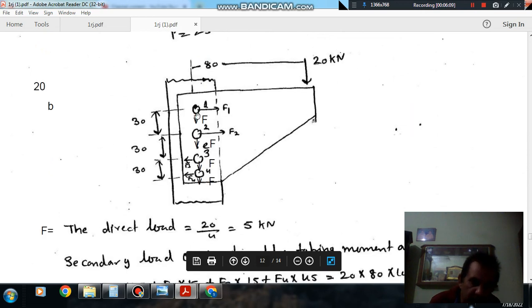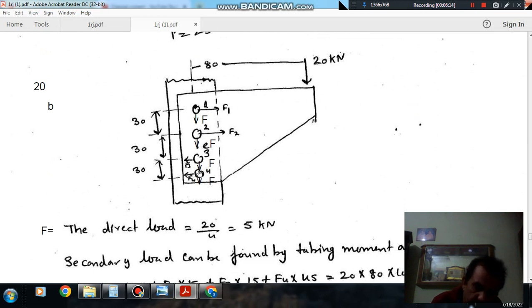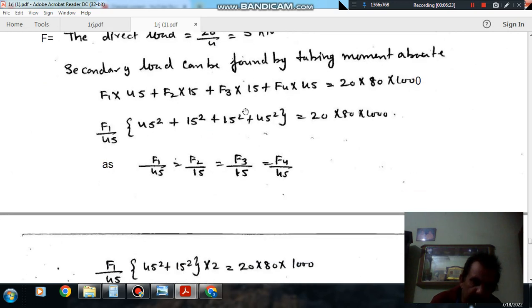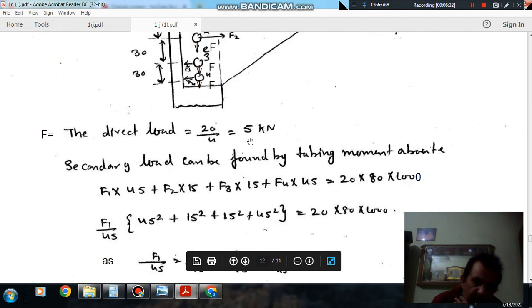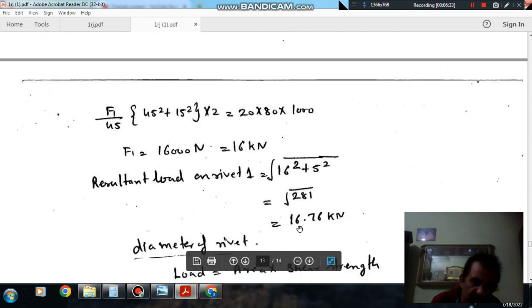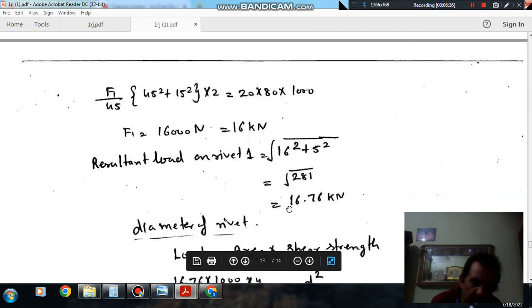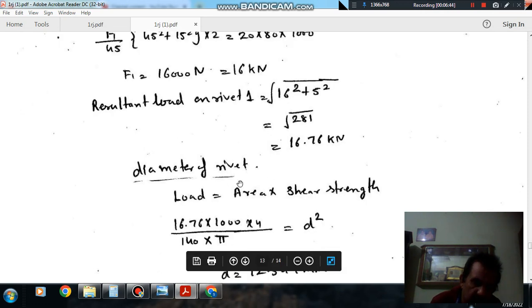So F1 is acting in this direction and F is acting in this direction. The value of F4 will also be same because F1 by 45 will produce F4 by 45. So both of these, the value of F1 and F4, are critical because here the resultant load is resultant of F4 and F, and here resultant load is F1 and F, resultant of F1 and F. So F is 5 kN and F1 is 16.76 kN. So the resultant load on rivet 1 is 16.76 kN.